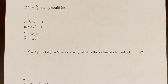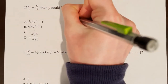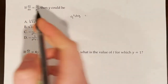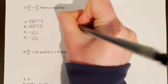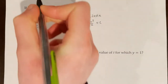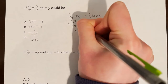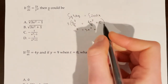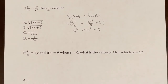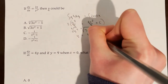Now let's practice multiple choice. If dy/dx = 2x/y², then y could be... Since there's no initial condition, this is a general solution problem. Separating variables: y² dy = 2x dx. Integrating both sides: y³/3 = 2x²/2 + c = x² + c. Multiplying by 3: y³ = 3x² + c. Taking the cube root: y = ∛(3x² + c).